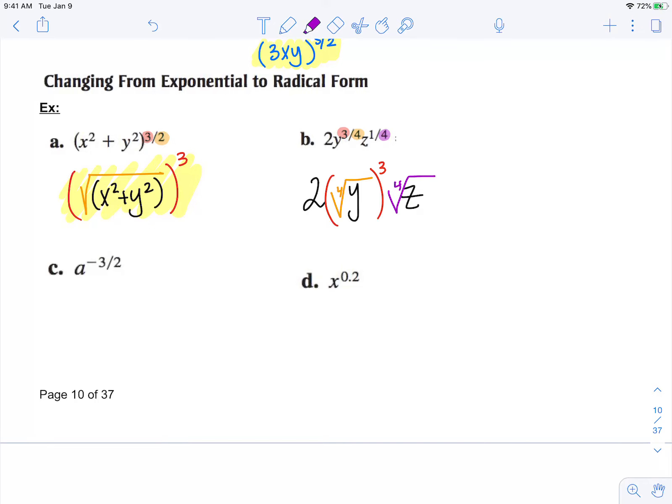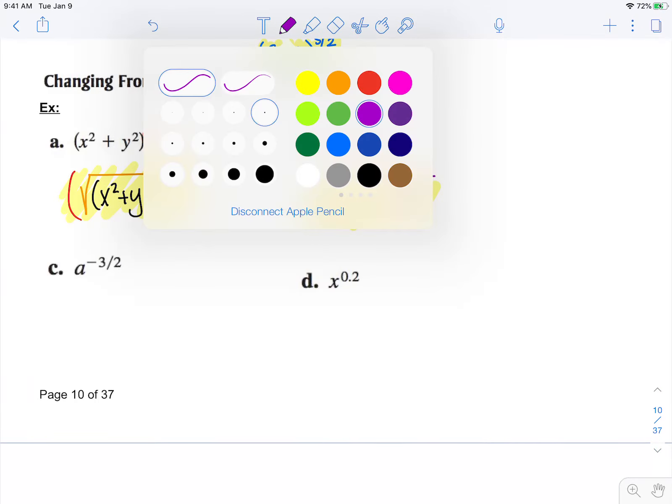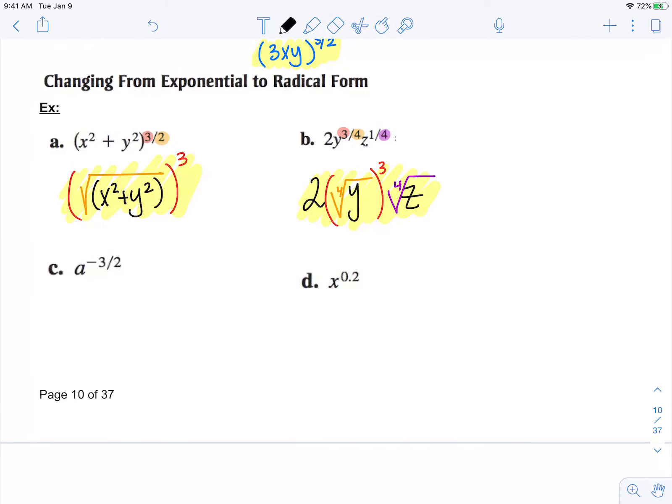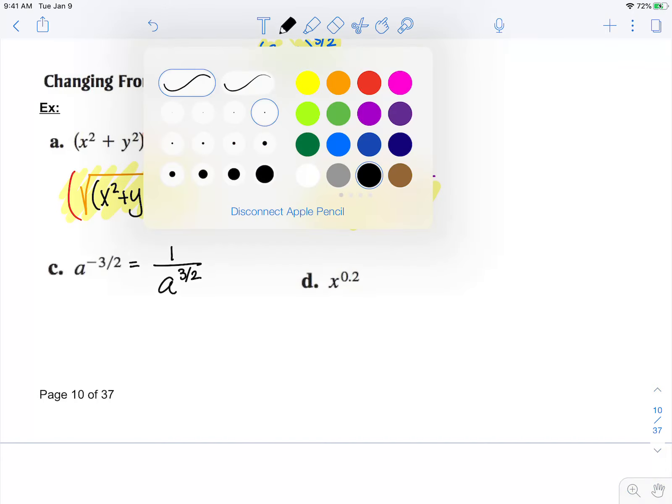Now in part c, we have a negative exponent, so that's the same as 1 over a to the 3 over 2. Now since we have this in our denominator, we have an excluded value.